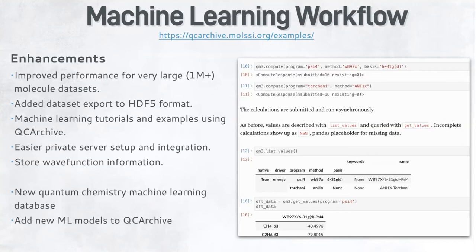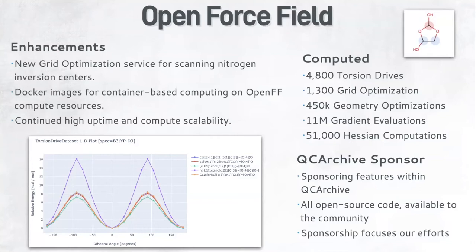We'd also like to talk about workflows with Open Force Field. Here we have a different set of computations required. Open Force Field is not interested in single energies or gradients, but in more complicated values — for example, torsion drive computations and results within QC Archive. So far, Open Force Field has computed about 4,800 torsion drives. A new thing we've been looking at is the ability to engage workflows to handle nitrogen inversion centers, which has required a new service called a grid optimization, which effectively does a constrained scan over whether a given nitrogen center is inverted or not, providing energy surfaces from that. So far we've run about 1,300 of them.